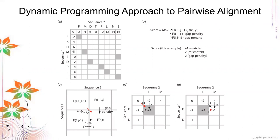The next line would be the gap penalty from the cell immediately above — F(i-1, j) — minus the gap penalty. The third line is the one on the left side, also minus the gap penalty. When we use the cell above or to the left, it means we are introducing a gap in the sequence.